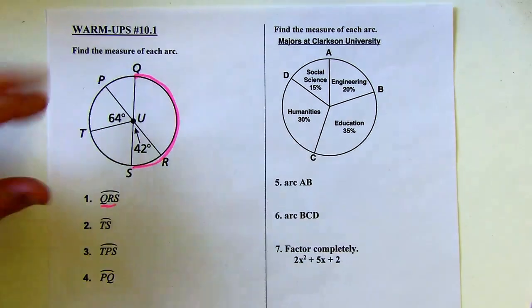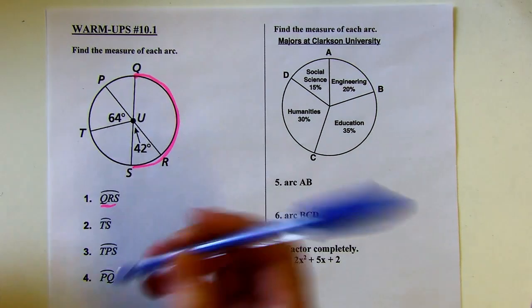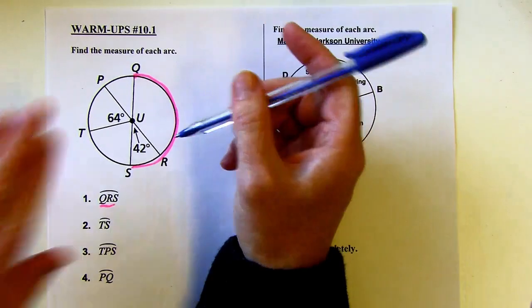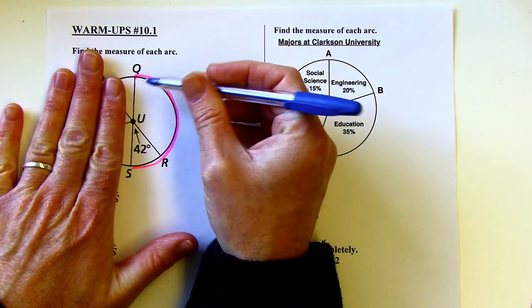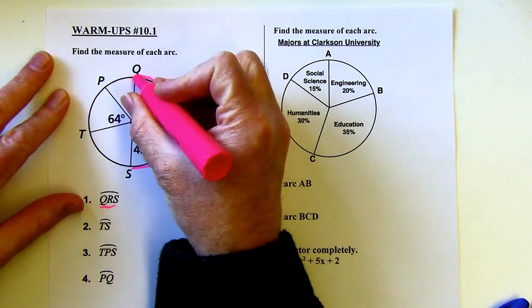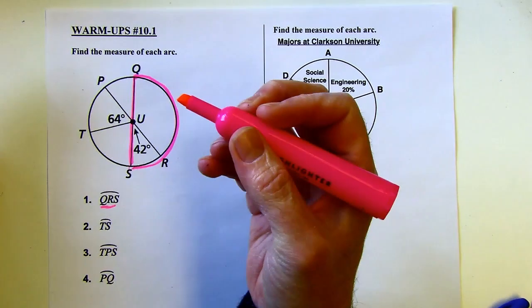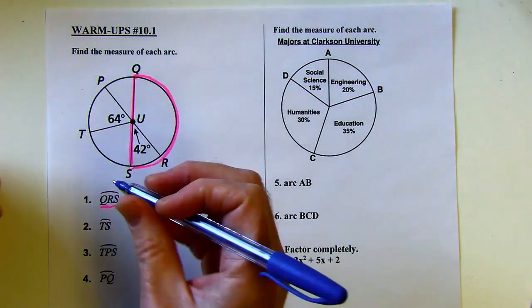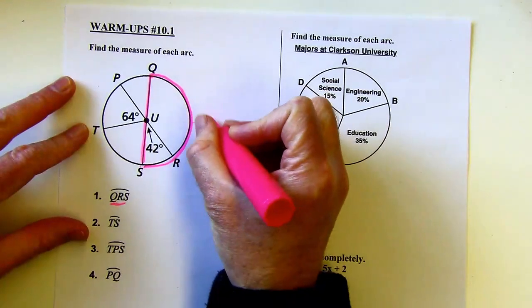Just to color code it, there's QRS. I've got the 42 degree slice, but what about this slice? Well, the key here is that dot tells me this is the center of the circle. So that means this cord goes through the center, that's a diameter, which means it cuts the circle exactly in half.